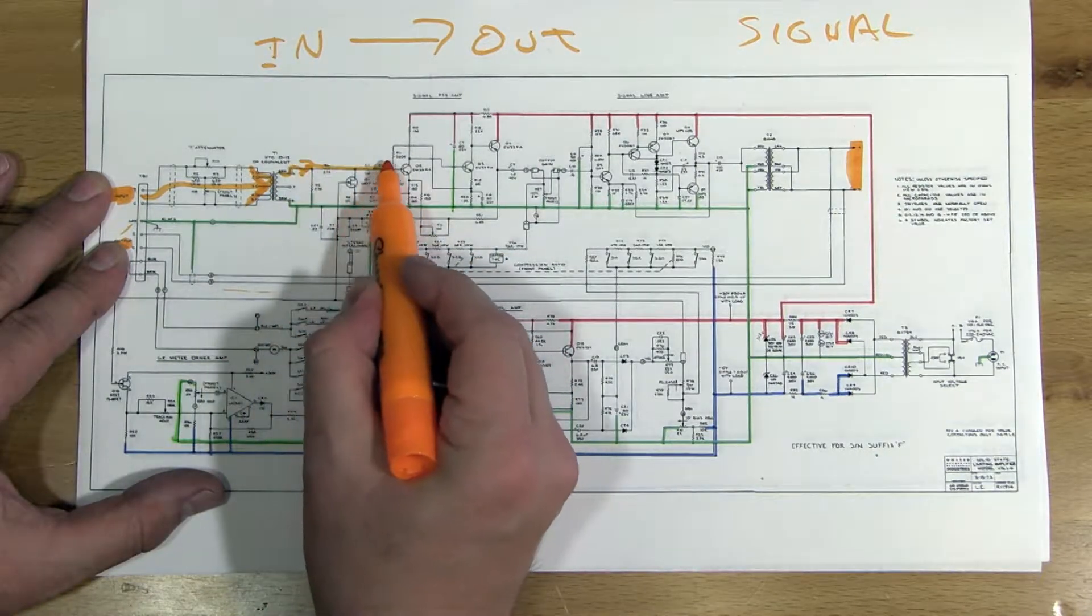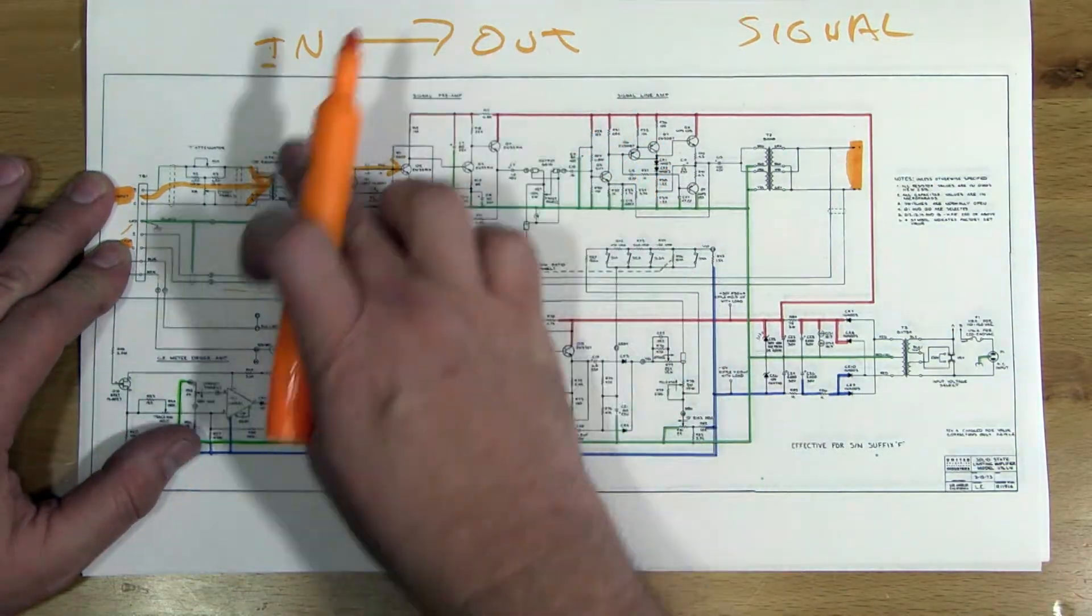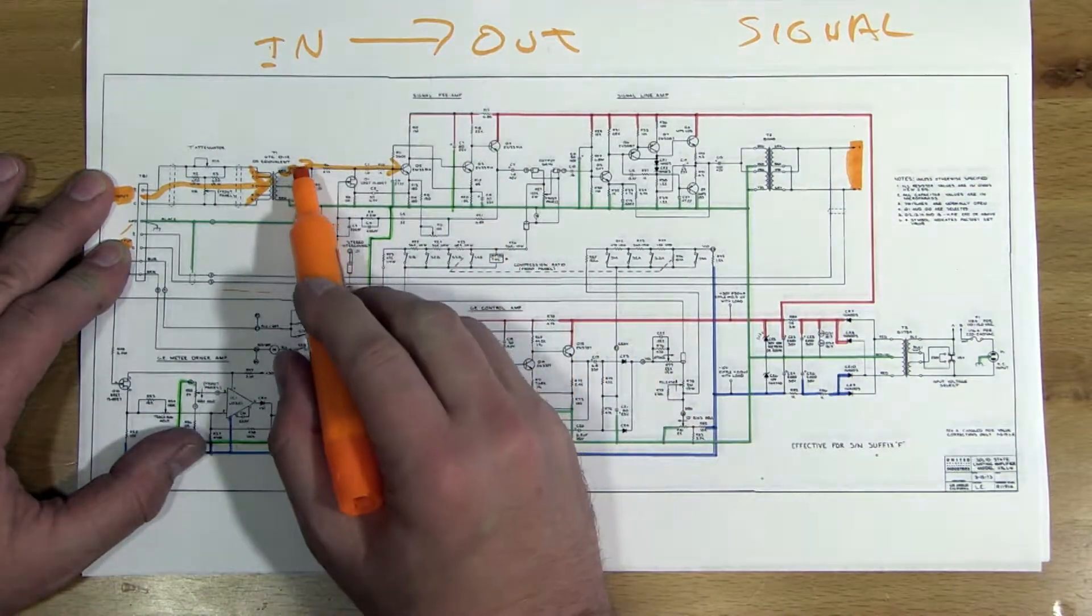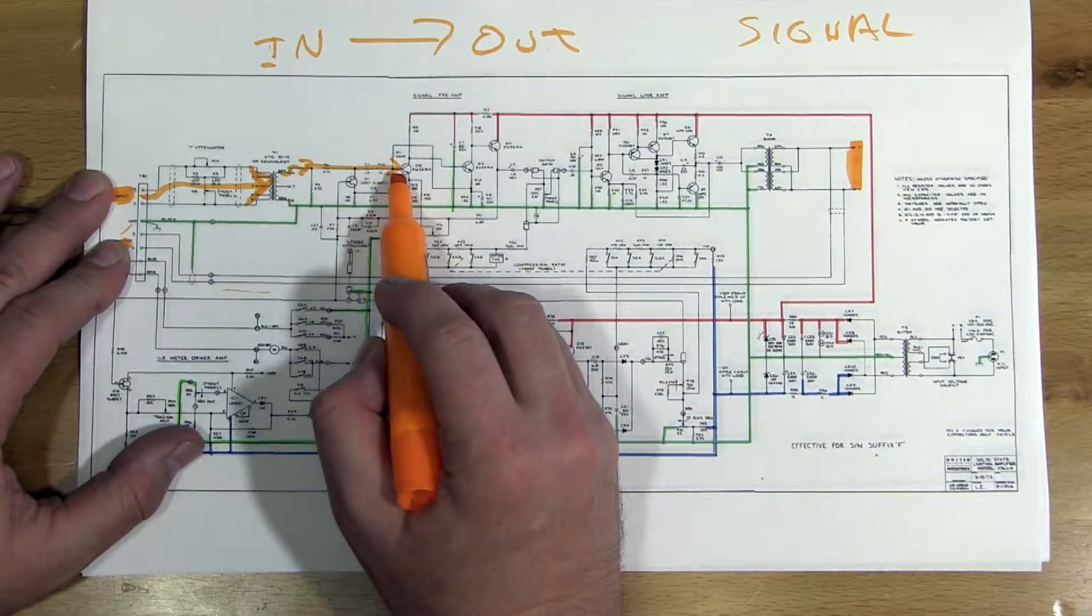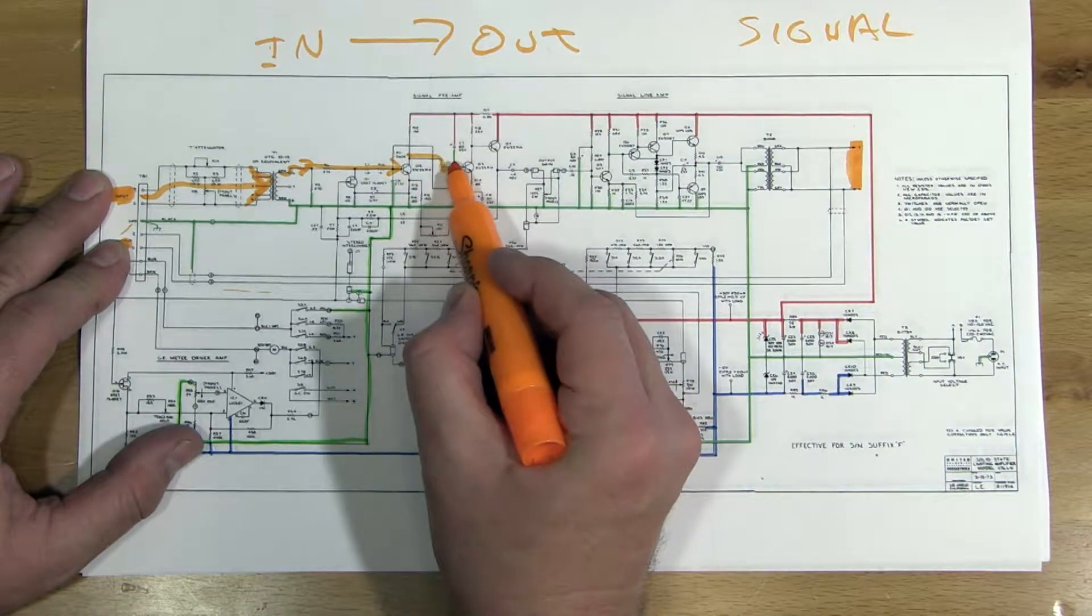And it goes in to the base of this first transistor, which makes sense. Base is the input. And this is the section we've looked at, so we already know that that's the input to this transistor. The output is on its collector to the next base.